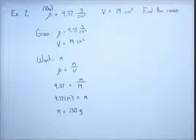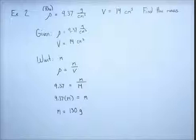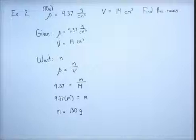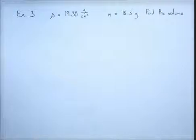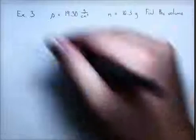Alright. If we've already found the density, and we've already found in example one, we were finding the density of the substance. In example two, we found the mass. Bet you can't guess what we're looking for in example three. As you no doubt suspected, now we have the density, we have the mass, we're trying to find the volume.